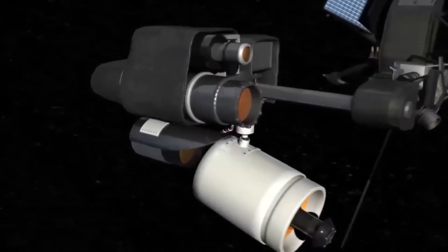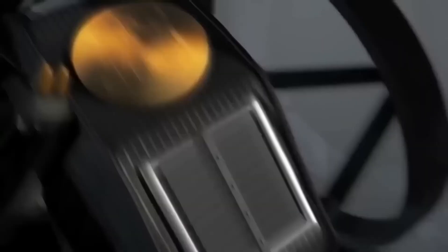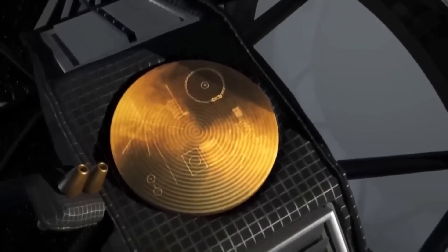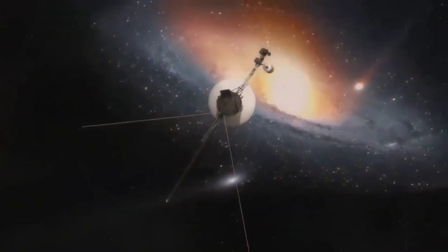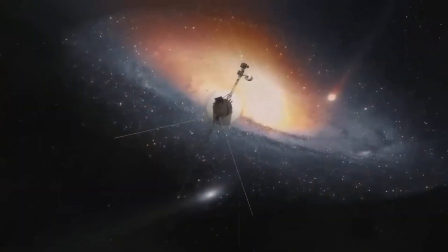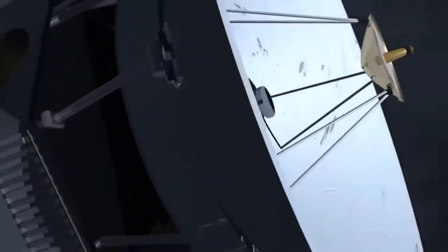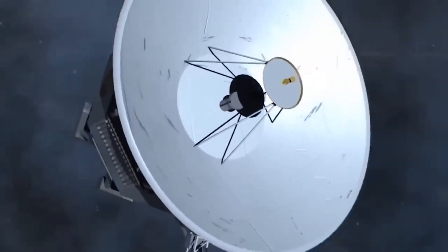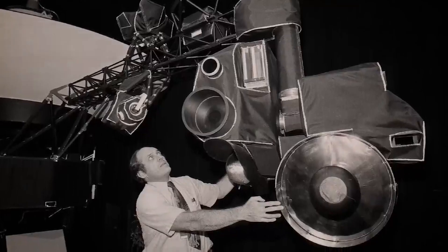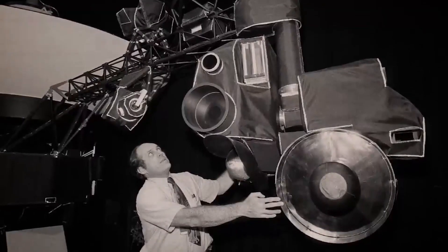Currently, Voyager 1 is at a distance of 23.3 billion kilometers from Earth, and it takes about two days for messages sent from the control tower to reach Voyager 1 in interstellar space. Communicating with Voyager 1, billions of kilometers away, is possible thanks to NASA's Deep Space Network, a worldwide network of spacecraft communication infrastructure.